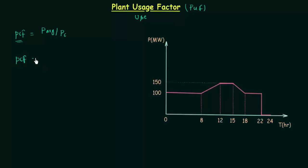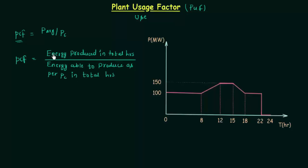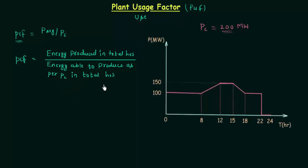Plant capacity factor is equal to energy produced in total hours over energy able to produce as per PC in total hours. In this particular case, the installed capacity or plant capacity was 200 megawatt. To find out the denominator, we need to multiply 200 megawatt with 24 hours because total hours is 24, and this gives us the energy able to produce as per PC in total hours. But from this load curve we can see the plant is not producing this much energy.